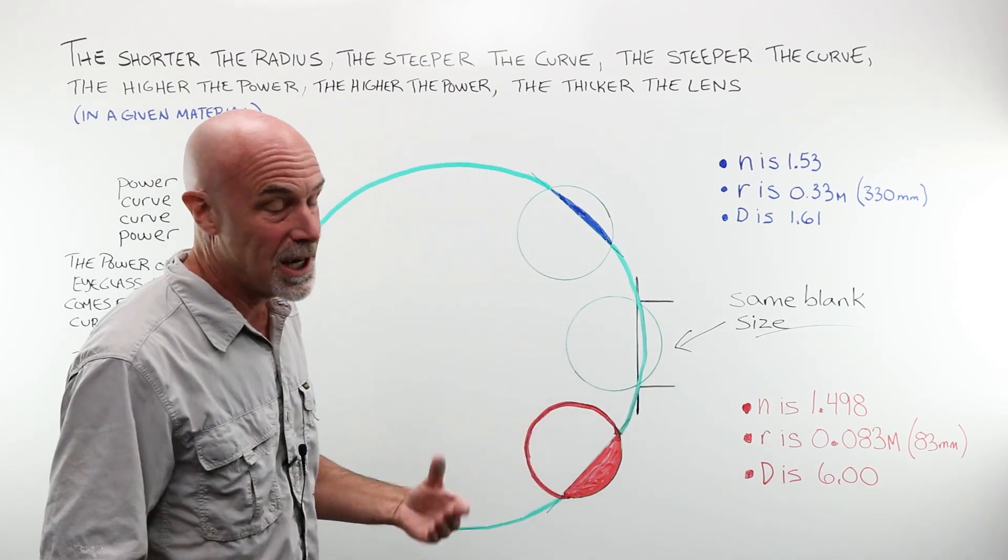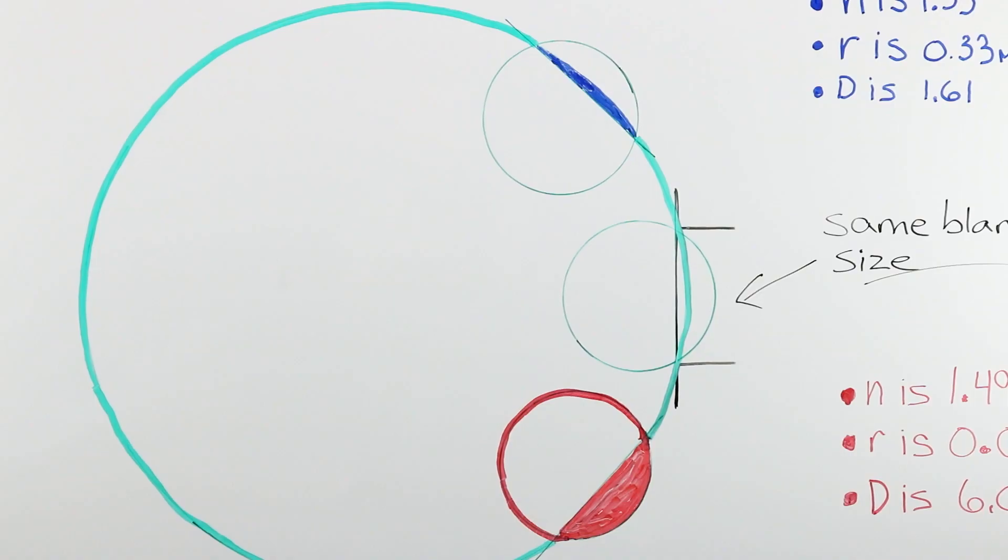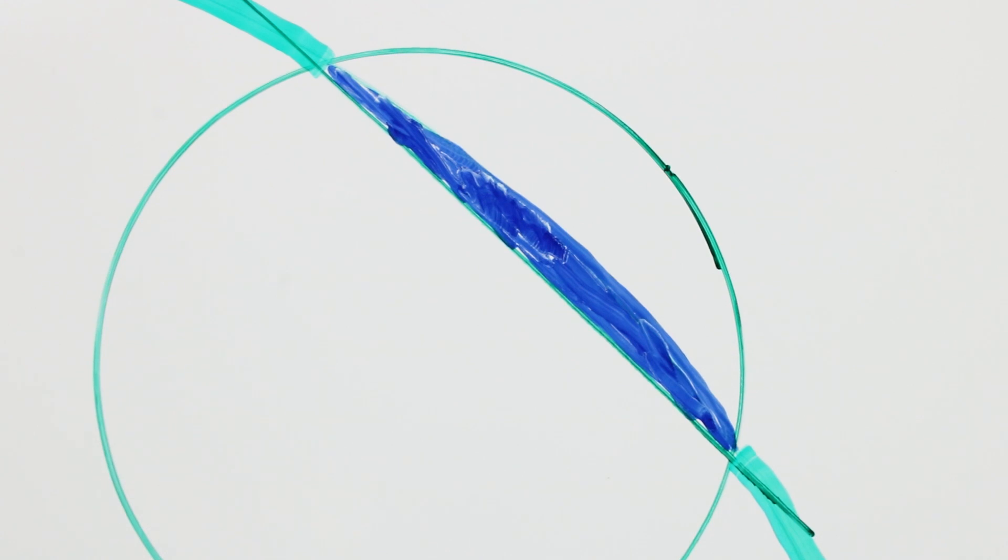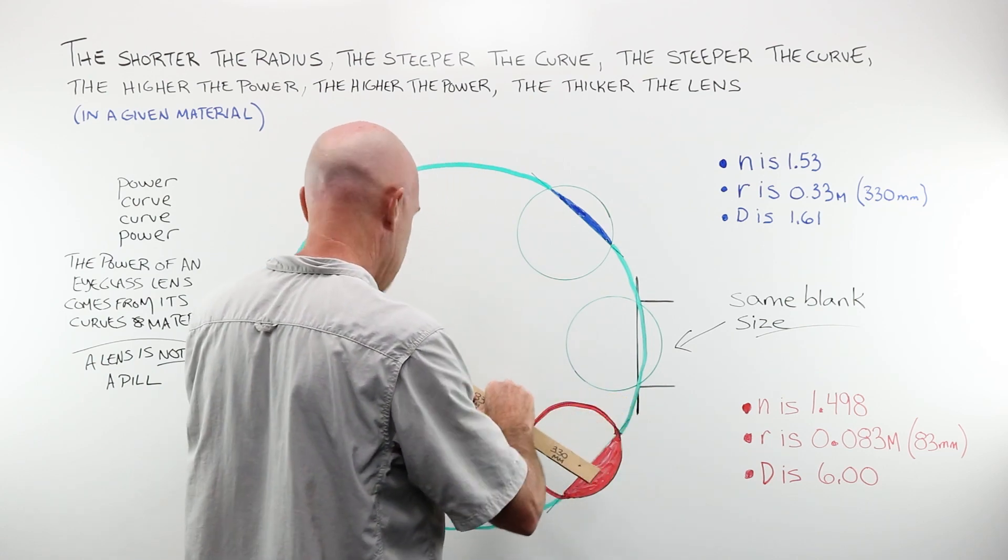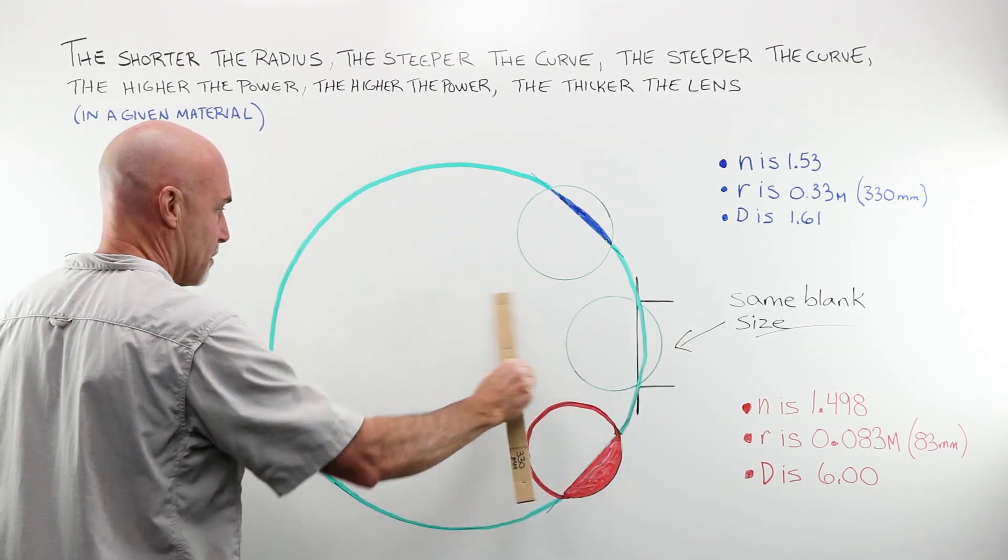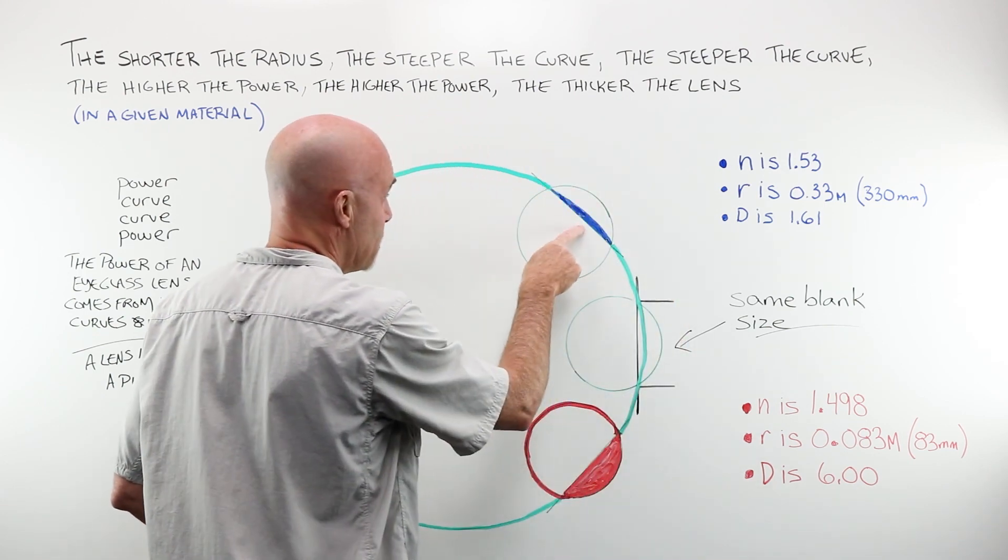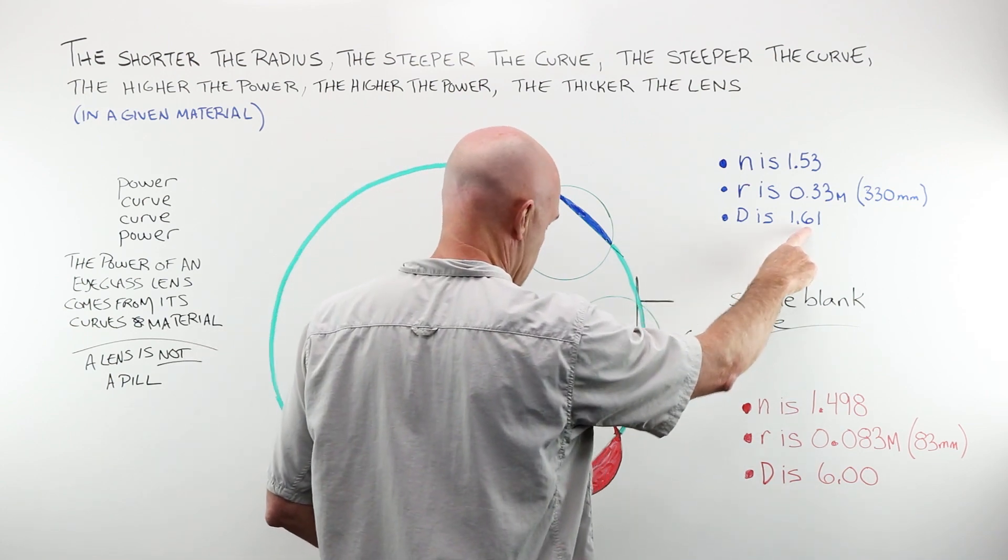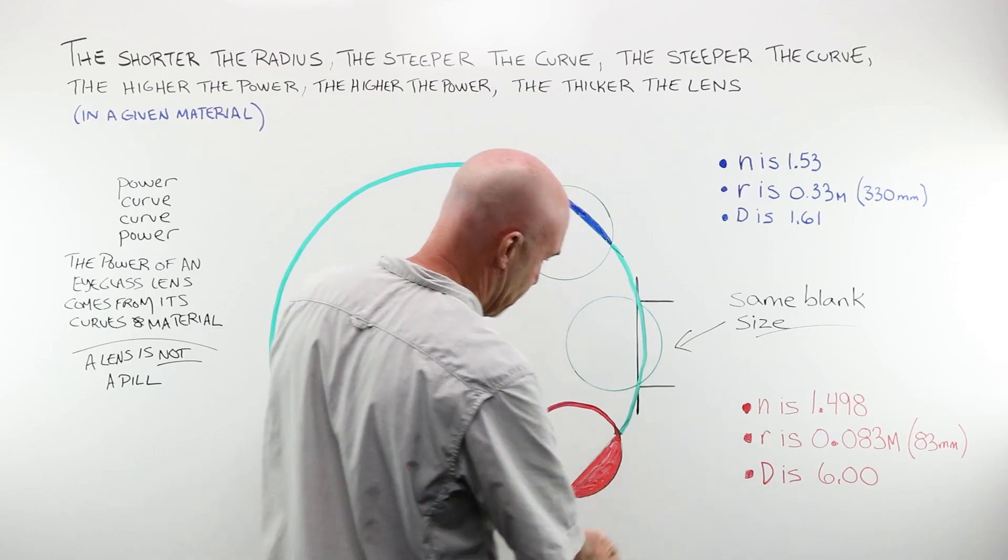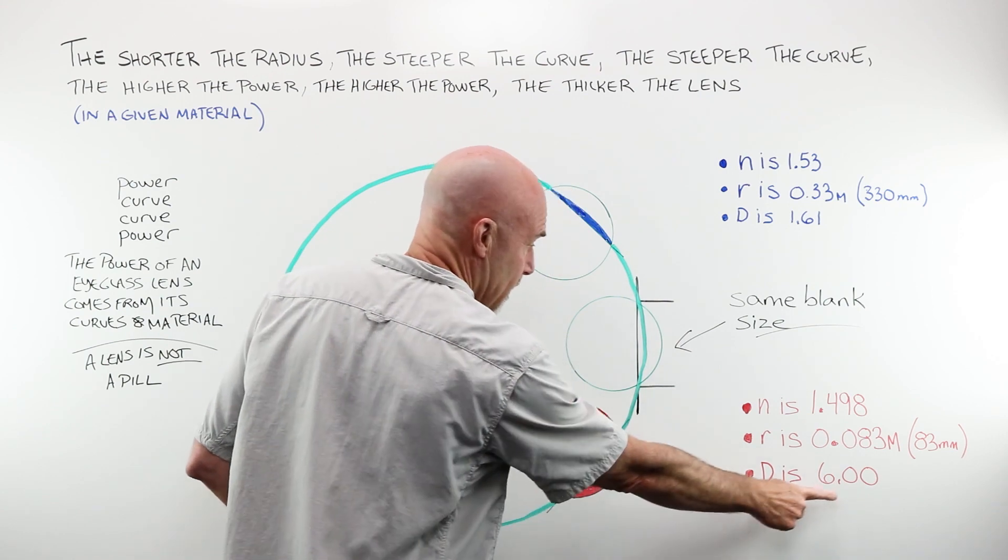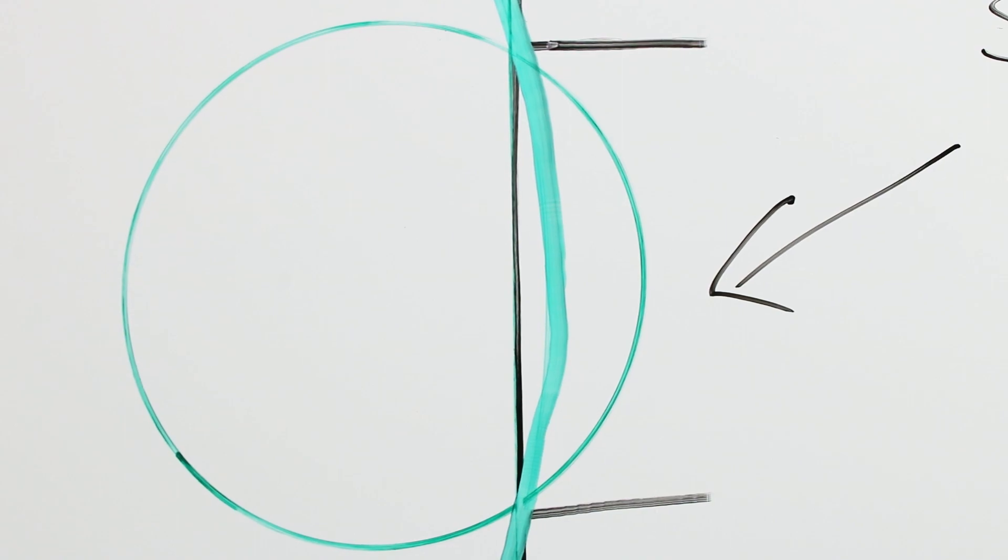But let's take a brief side step. I have two lenses: I have a blue lens and a red lens. My blue lens has low power because it has a very shallow radius of curvature. It has a radius of 330 millimeters, and this is actual. This is actually 330 millimeter radius, about there. Very shallow. It only has the power of 1.61. My red has an extremely short radius of curvature, 83 millimeters, and in this material it gives me a power of six, much much stronger.